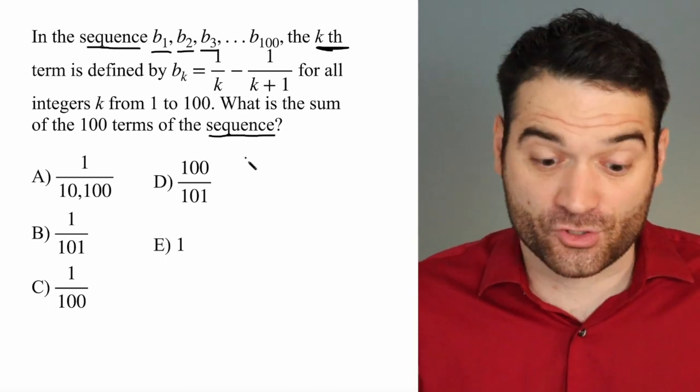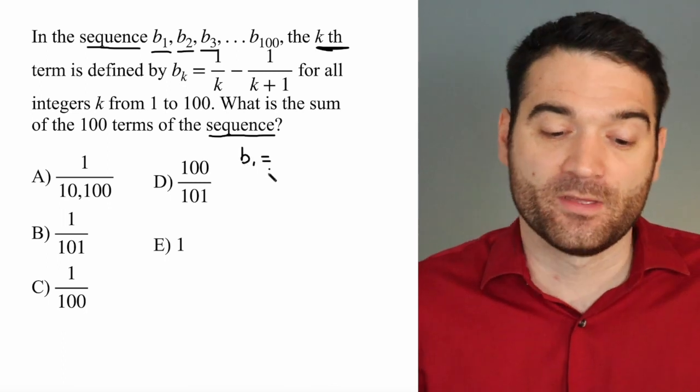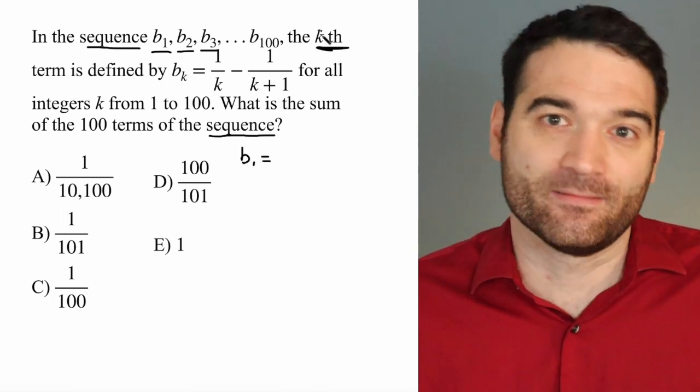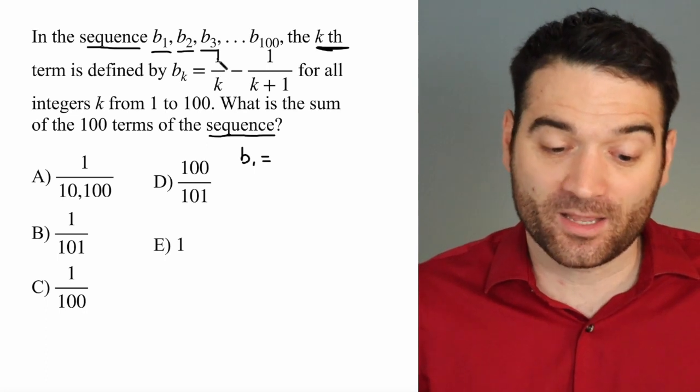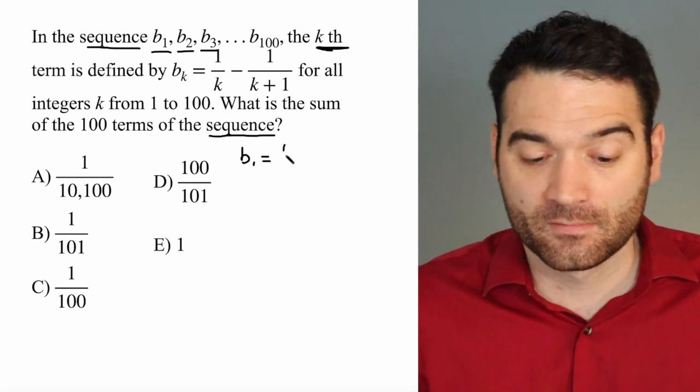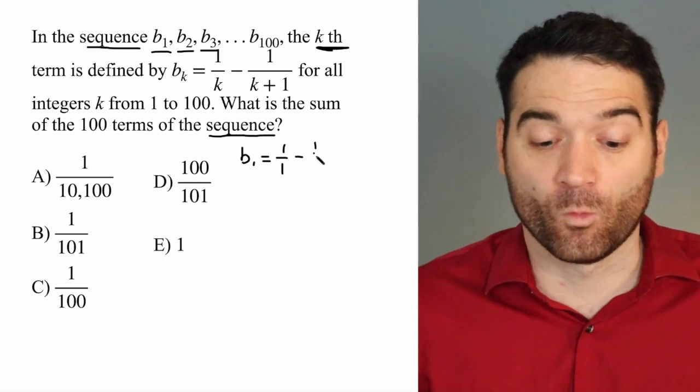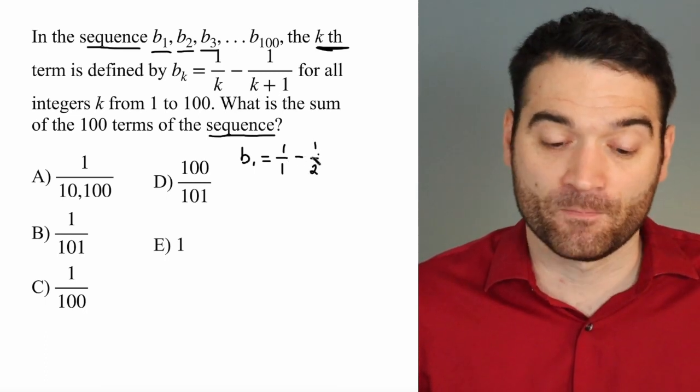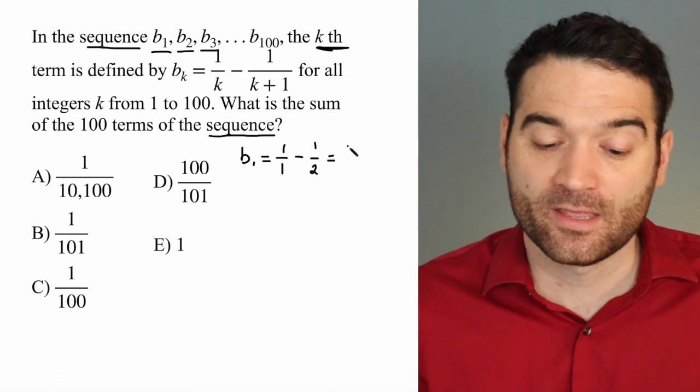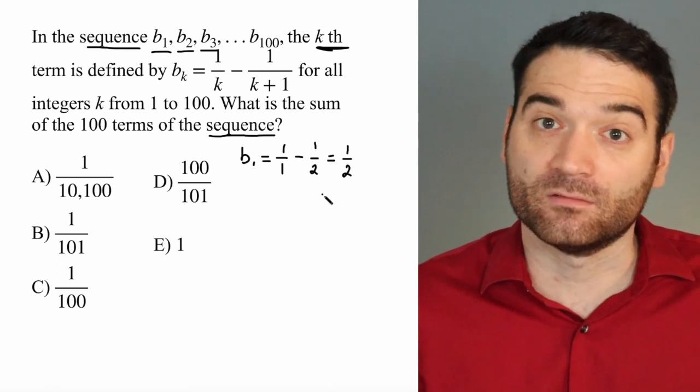Let's start with the first term. What is B sub 1? Again, the first term, so when k equals 1, is going to be, if I plug it into this, 1 over 1 minus 1 over 1 plus 1, or 1 over 2. And what does that equal? Well, 1 minus 1 half is equal to 1 half. Great.